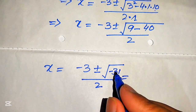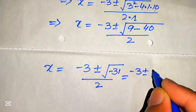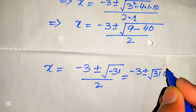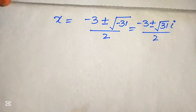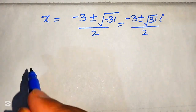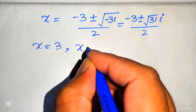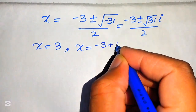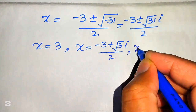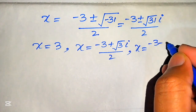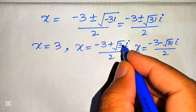Since a negative sign appears inside the square root, it becomes imaginary. We write it as minus 3 plus or minus square root of 31 times i, divided by 2. So we have three values of x: the first is x equals 3; the second is x equals (minus 3 plus √31·i) / 2; and the third is x equals (minus 3 minus √31·i) / 2.